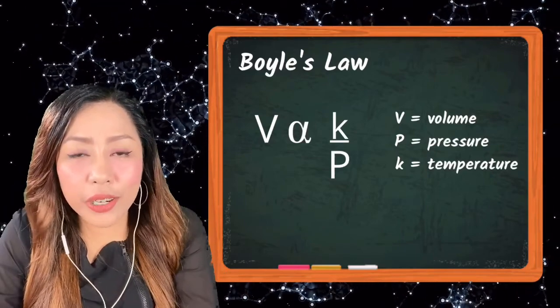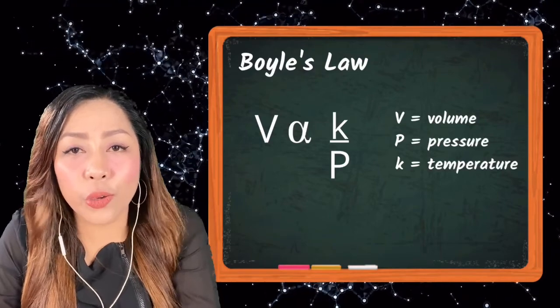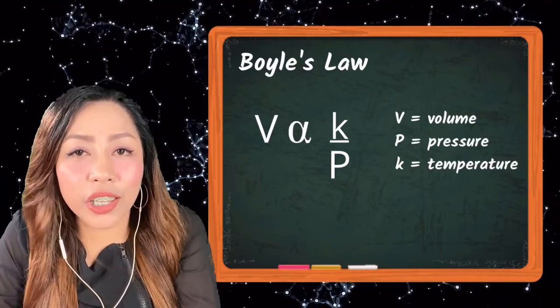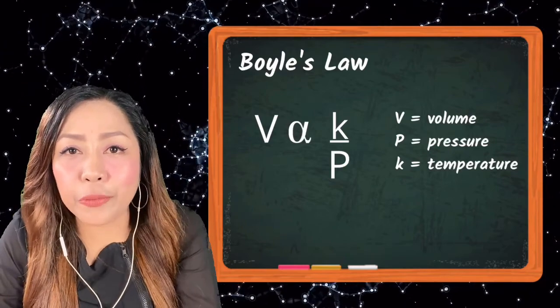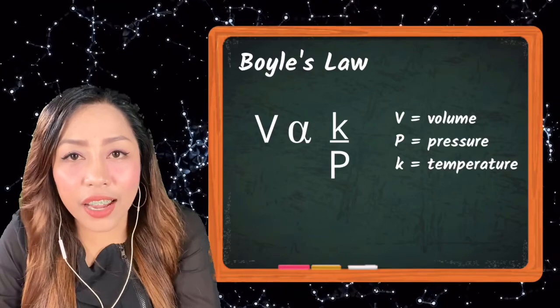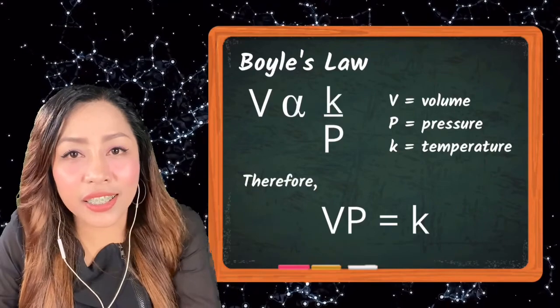As you can see in our equation, the letter V, which stands for volume, is written in the numerator in the left side of the equation. While P, for pressure, is written in the denominator at the right side of our equation. This indicates inverse proportionality.